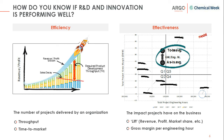Then we look at effectiveness, which is the other area of performance. If you look at the graph, you will see on the x-axis engineering hours, and on the y-axis it is the gross margin or revenue that every engineering hour actually generates. Looking at historical projects in your organization, you will understand which projects have delivered more or less benefit, and obviously you want to do as many projects as possible in the Q1 square and as few as possible in the Q4 square.